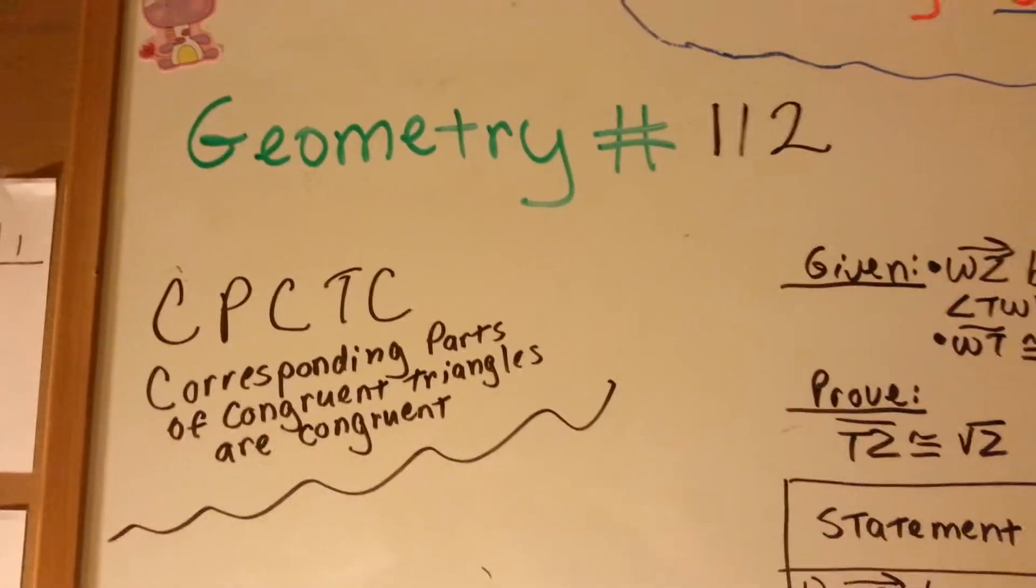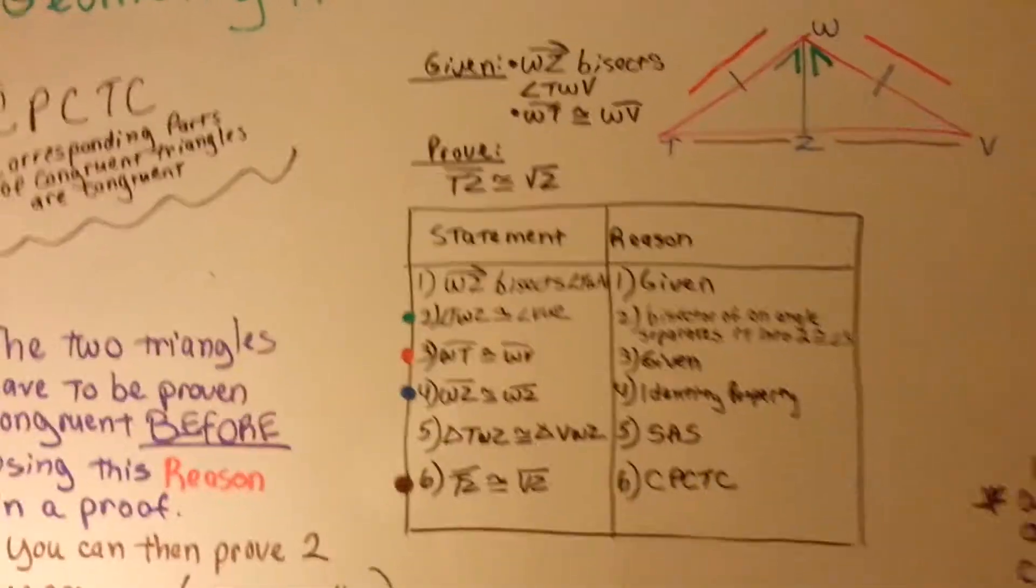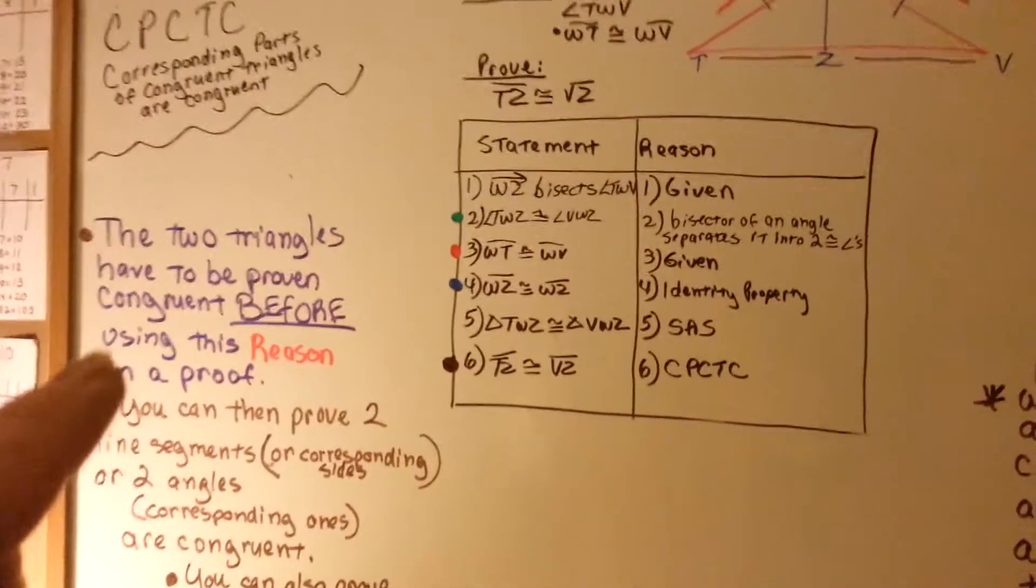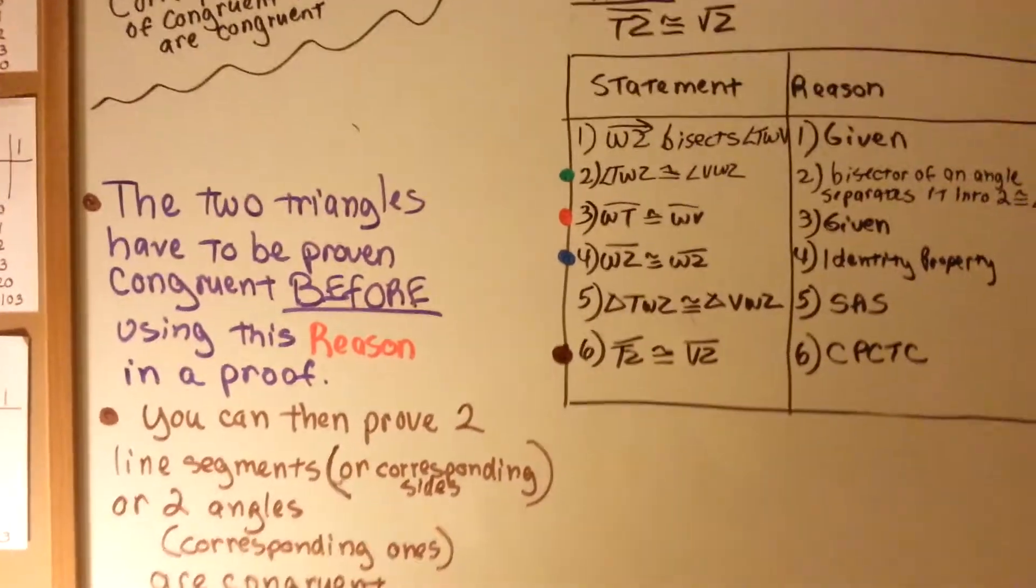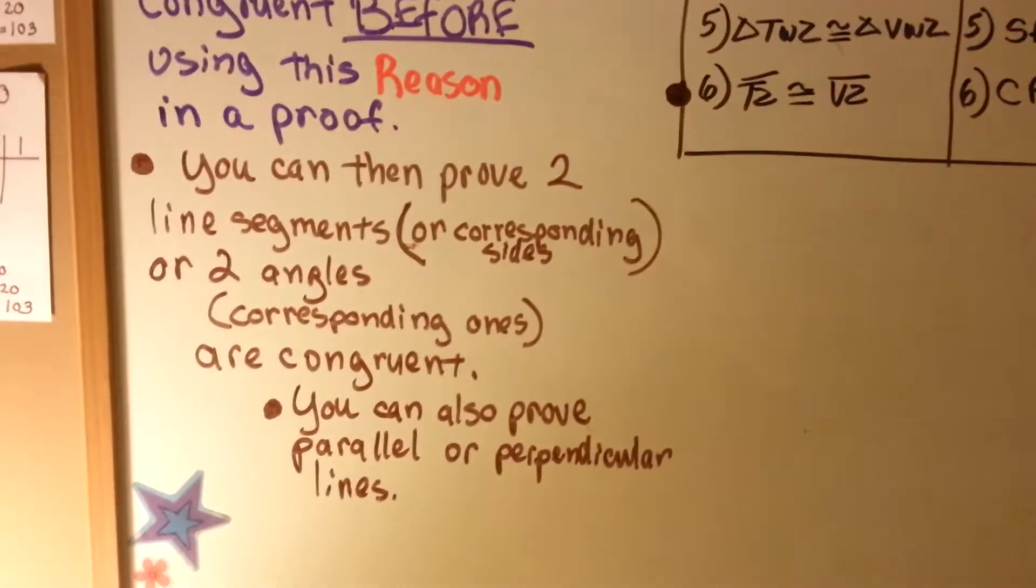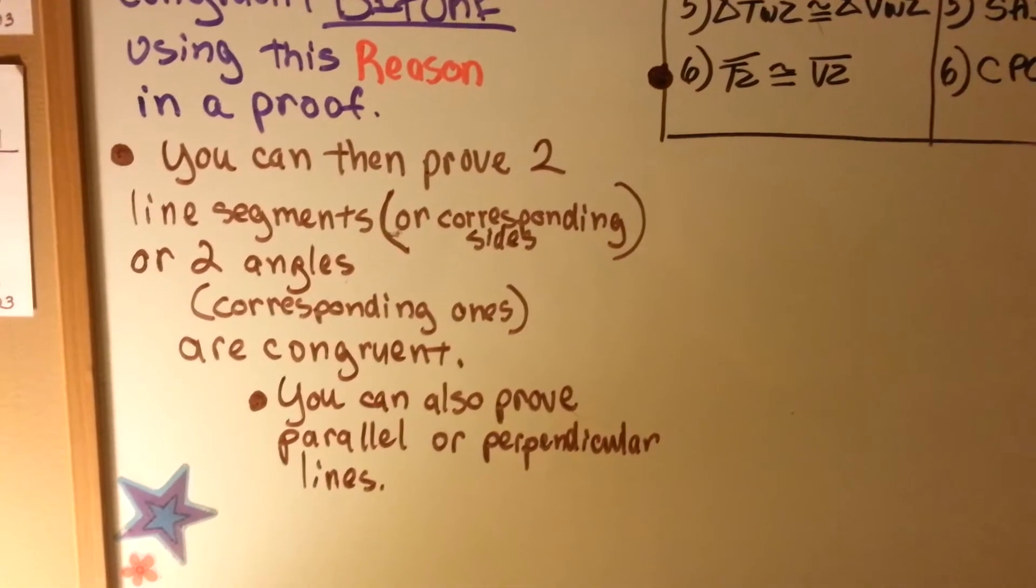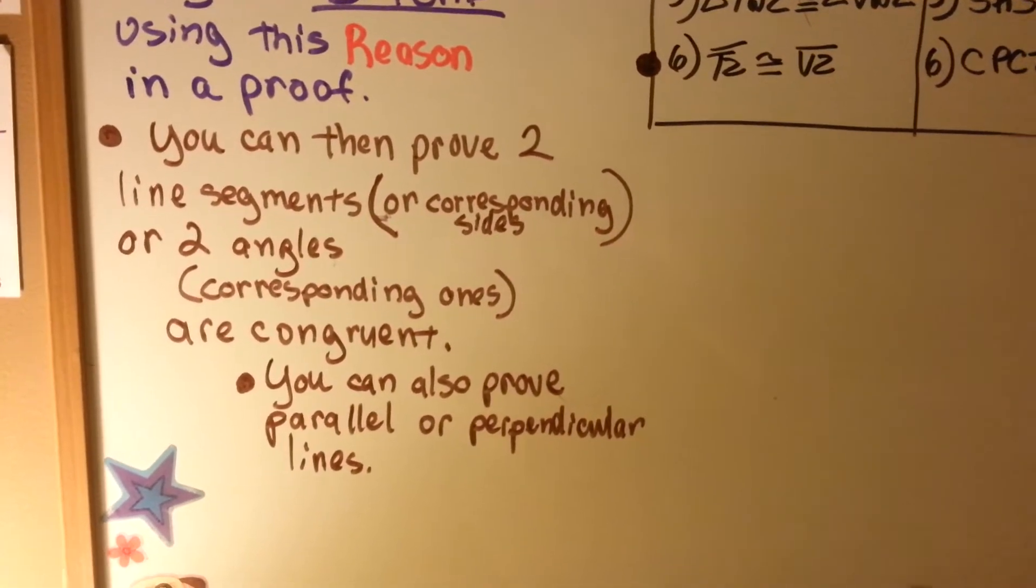The only thing is, you've got to make sure the two triangles have been proven congruent before using this reason in a proof. You can then prove two line segments or corresponding sides, two angles, corresponding ones, are congruent.